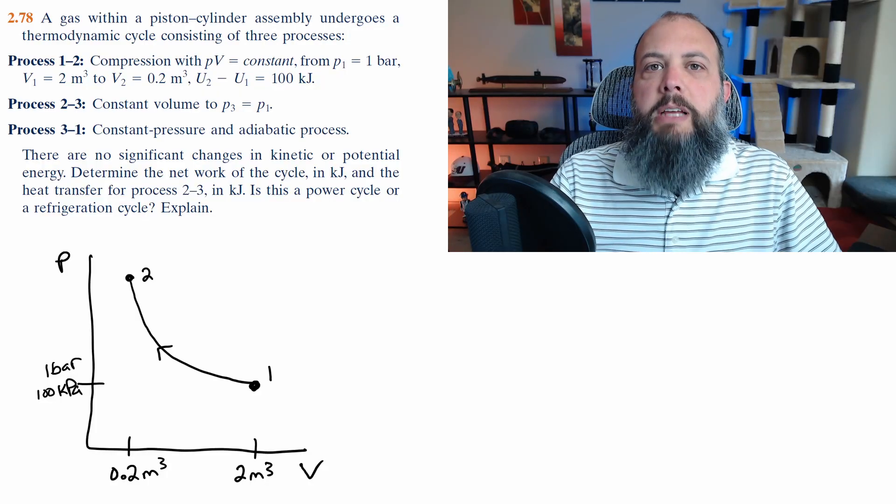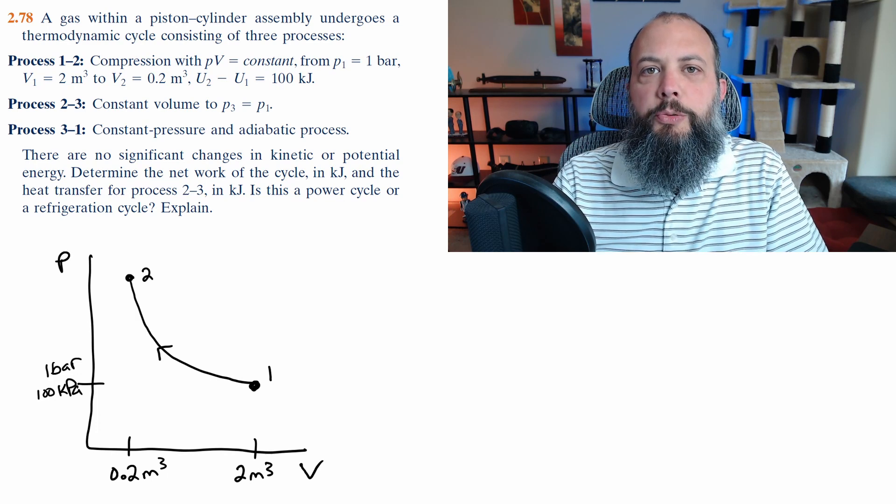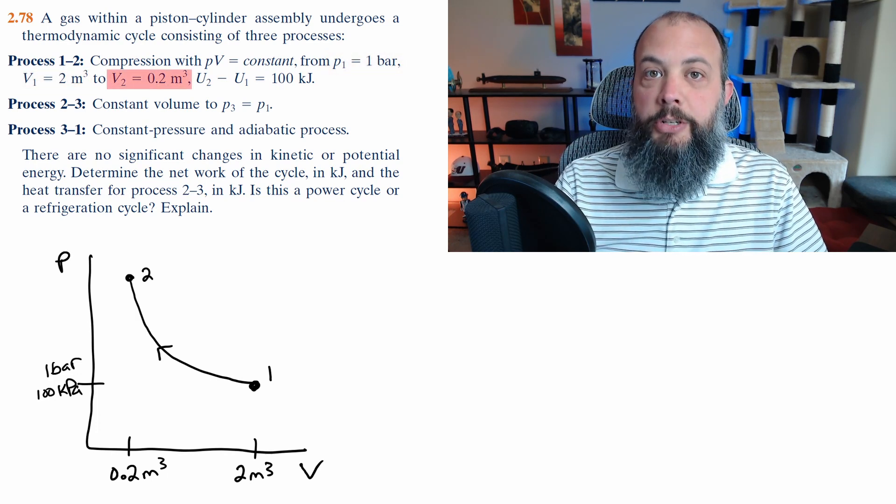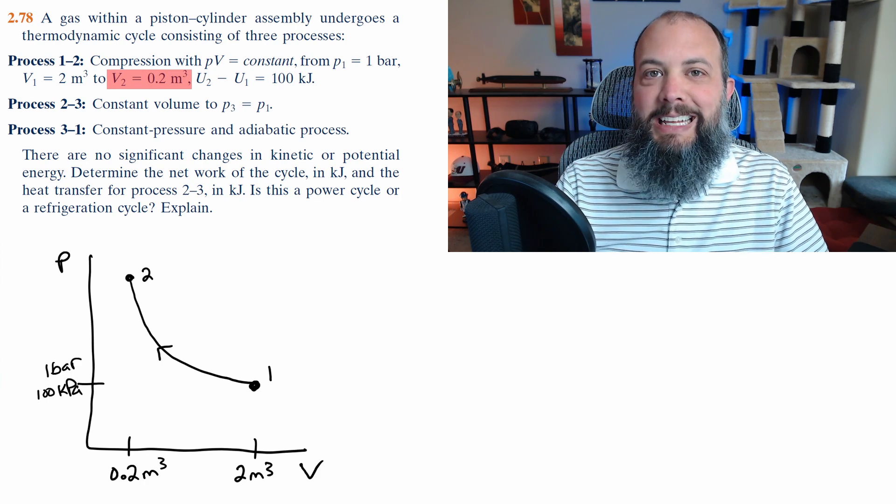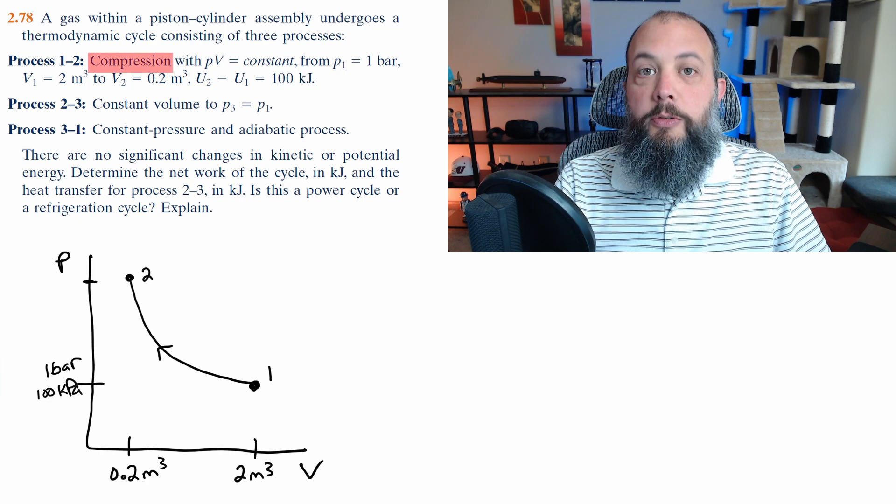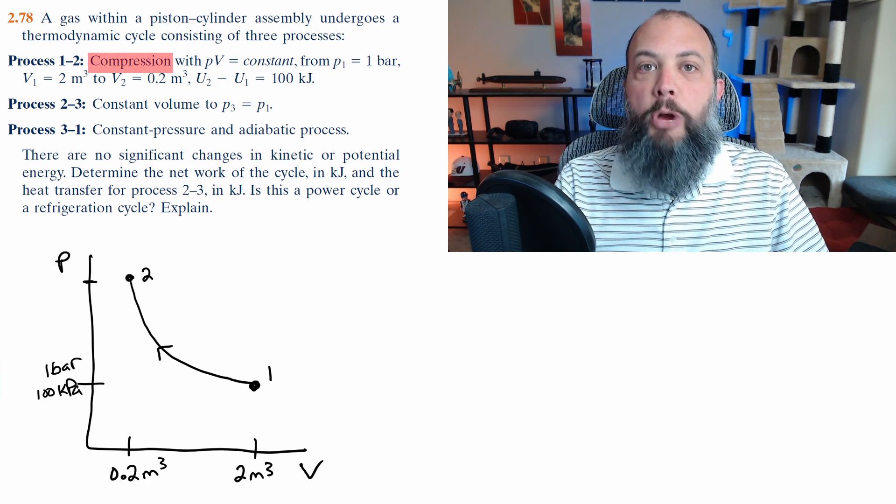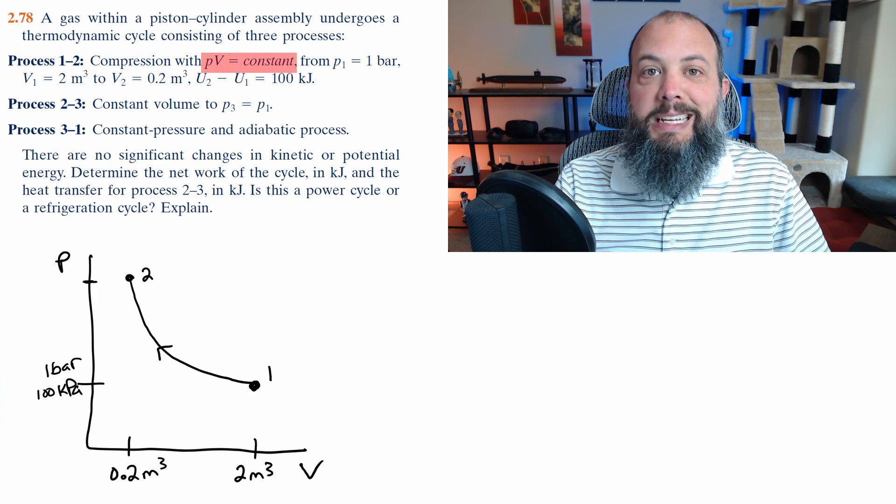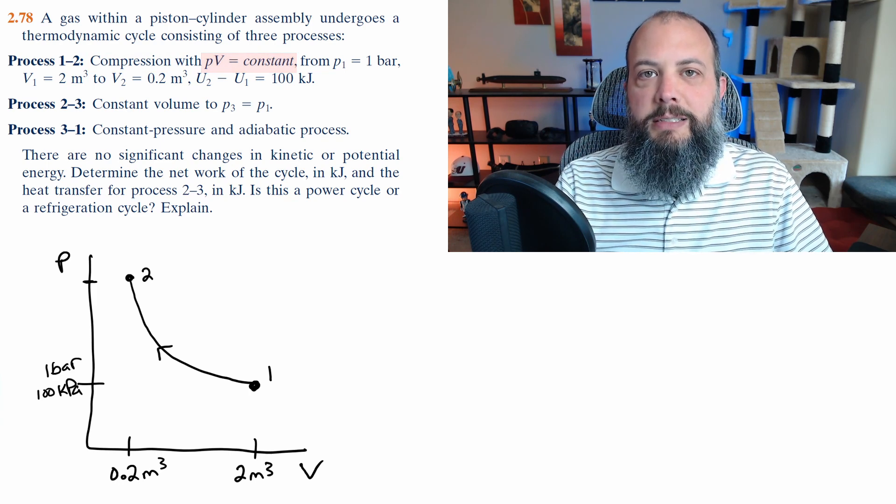Start my PV diagram with process one to two. P1 and V1 are given so those are easy to label. We're given V2 so I can write that number down but we're not given P2 so I don't have that number labeled yet. I know this process goes from right to left because it says compression meaning volume is getting smaller and then I knew this was a concave up curve because PV equals a constant.